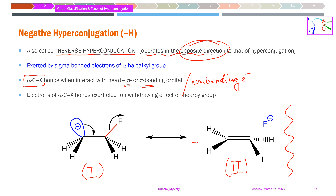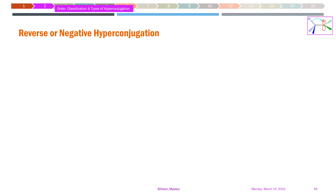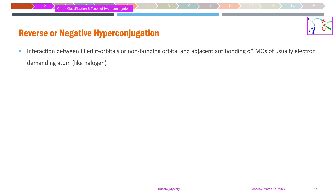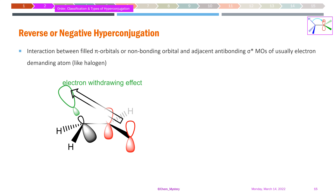Another example of negative hyperconjugation comes from alkenes. The pi-bonded electrons can delocalize into anti-bonding molecular orbitals of an electron-demanding group. In an alkene where the alpha carbon bears at least one halogen atom — say chlorine — the sigma* anti-bonding molecular orbital of the C–Cl bond is empty. The electrons from the carbon–carbon double bond delocalize into this sigma* orbital. This electron-withdrawing effect is considered negative or reverse hyperconjugation, the −H effect.